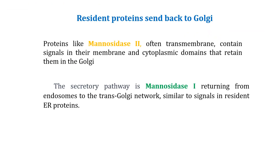Resident proteins can be sent back to the Golgi. Similar to how residual proteins of the ER lumen are sent back via the KDEL receptor, there are two types of proteins responsible for transport back to the Golgi. Golgi apparatus resident proteins — such as those involved in glycosylation — need to stay within the Golgi compartment instead of moving along the secretory pathway.